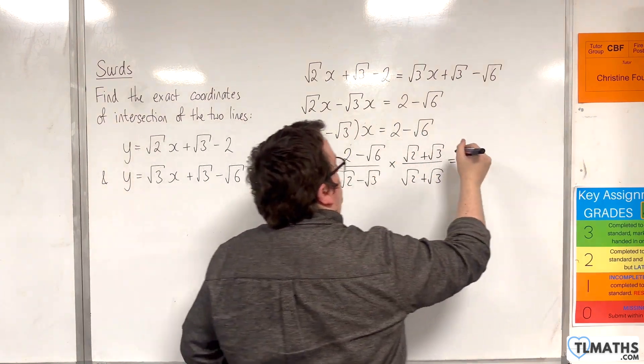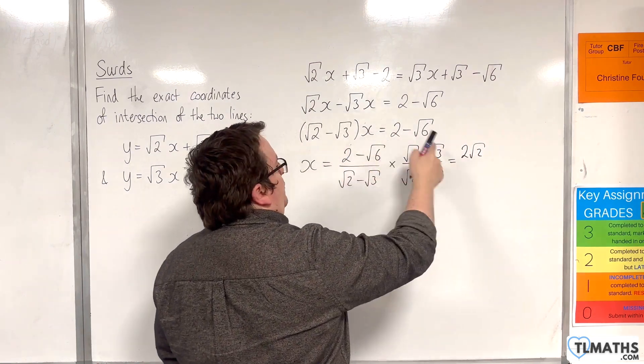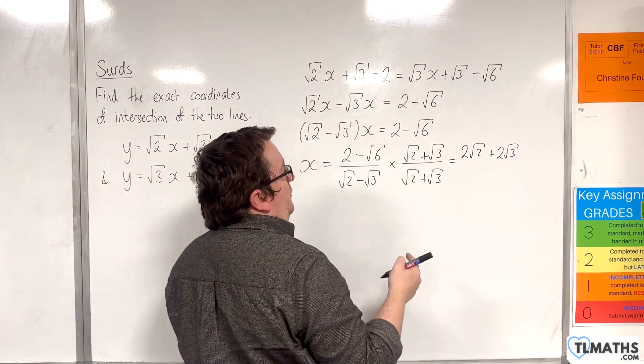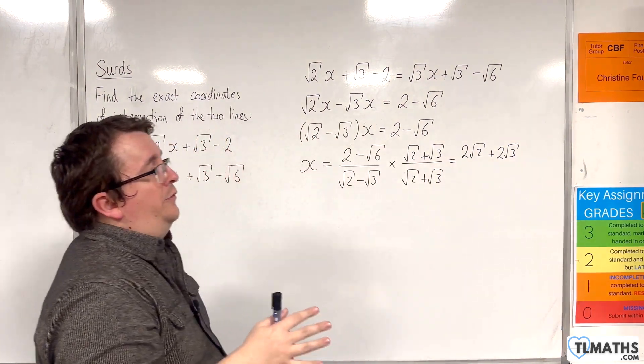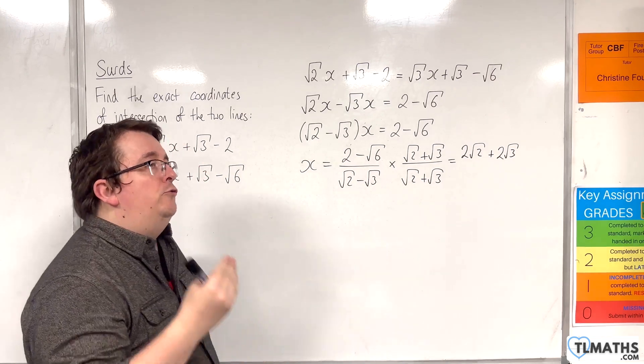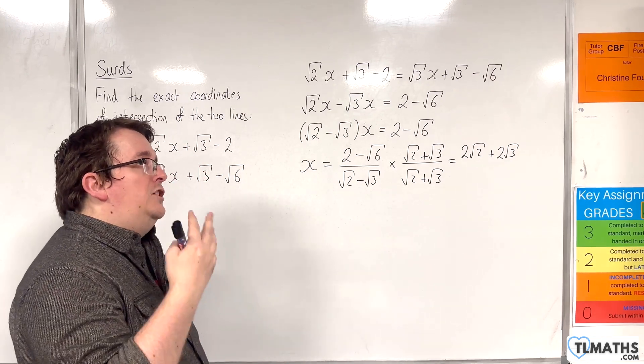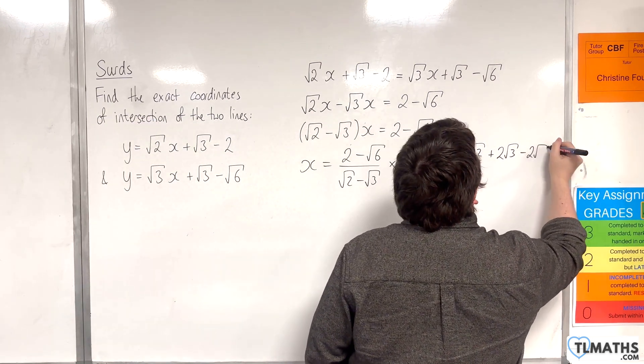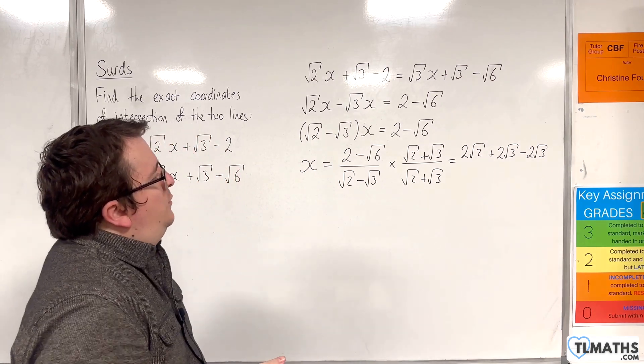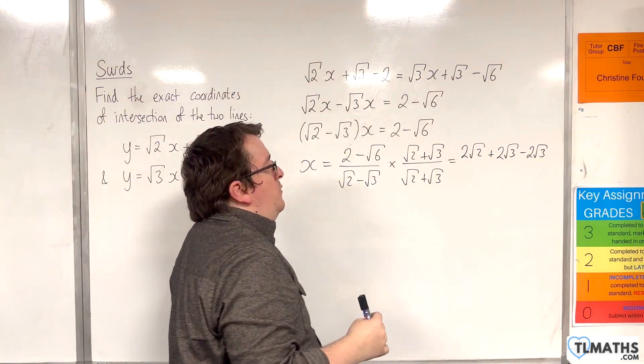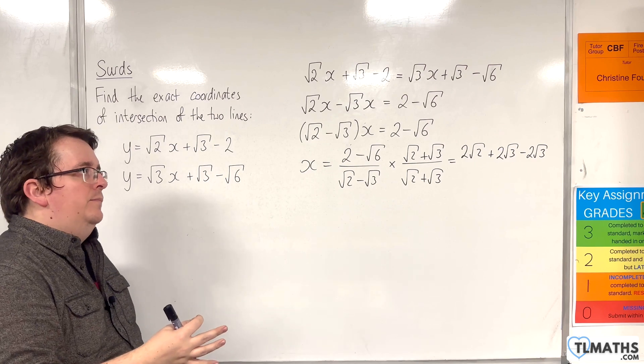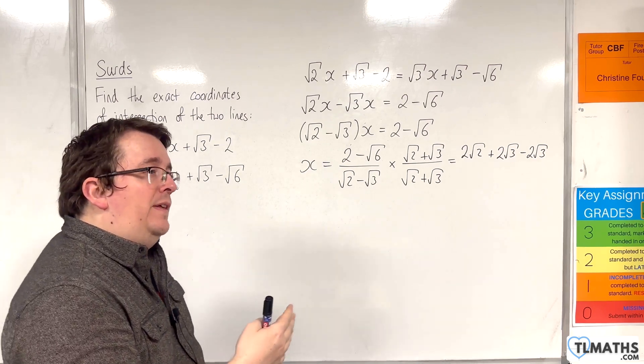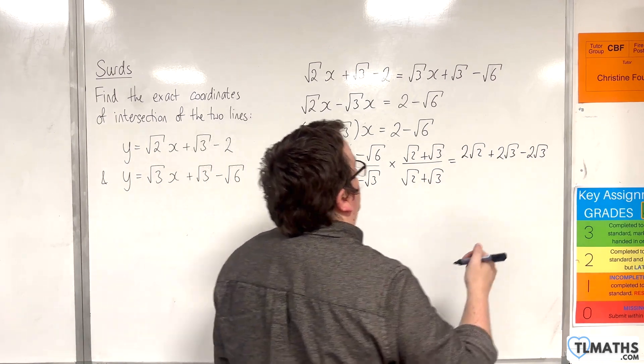And we'll have 2 times root 2, so 2 root 2, then 2 times root 3, then minus root 6 times root 2, which is going to be minus root 12. Now minus root 12, 12 is 4 times 3, so that would be minus 2 root 3. And we've got the minus root 6 times root 3, so that would be minus root 18. 18 is 9 times 2, so that's 3 root 2. So let's take away 3 root 2.